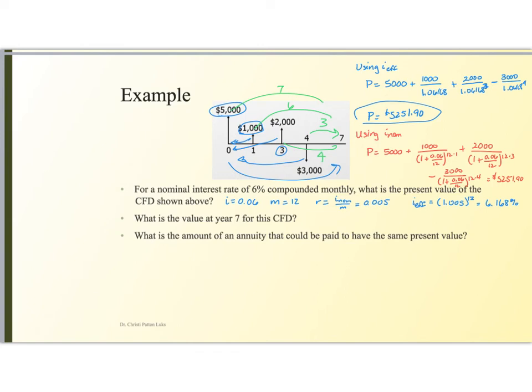We could use the present value and move it to the future seven years. I could do this using the effective interest rate. Or I could do this using one plus 0.06 over 12 to the 12 times seven power. Either way, any of these ways I do this, I'm going to get the same answer.